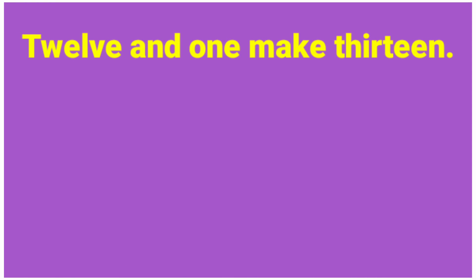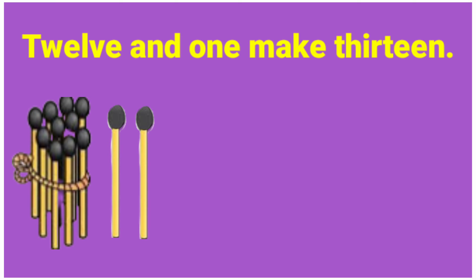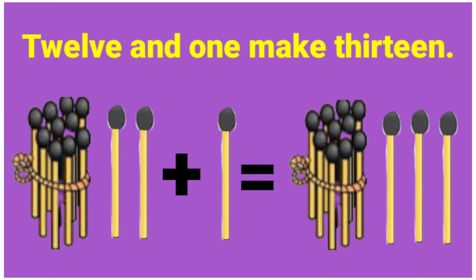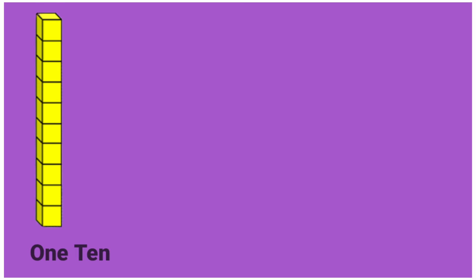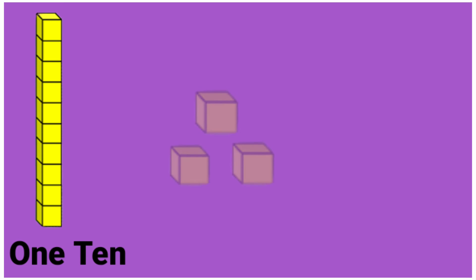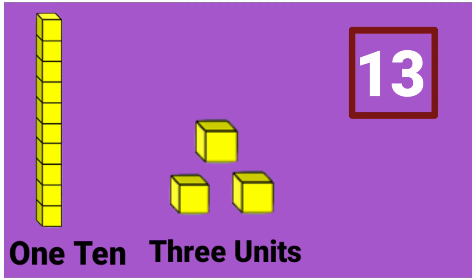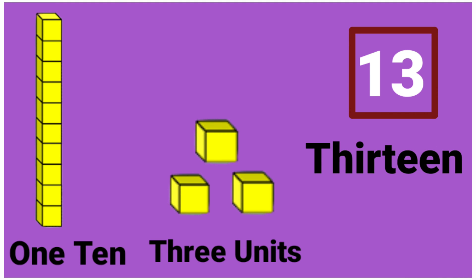12 and 1 make 13. 12 plus 1 is equal to 13. 1 ten and 3 units make 13. 13 in words: T-H-I-R-T-E-E-N. 13.